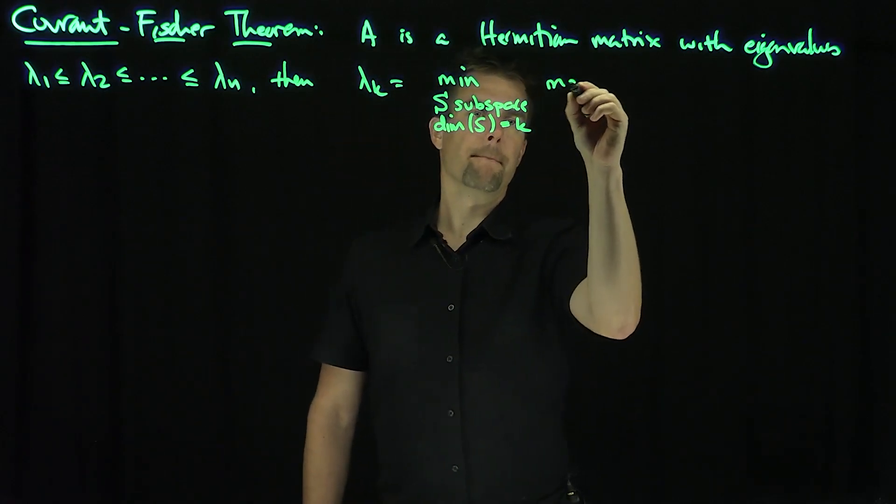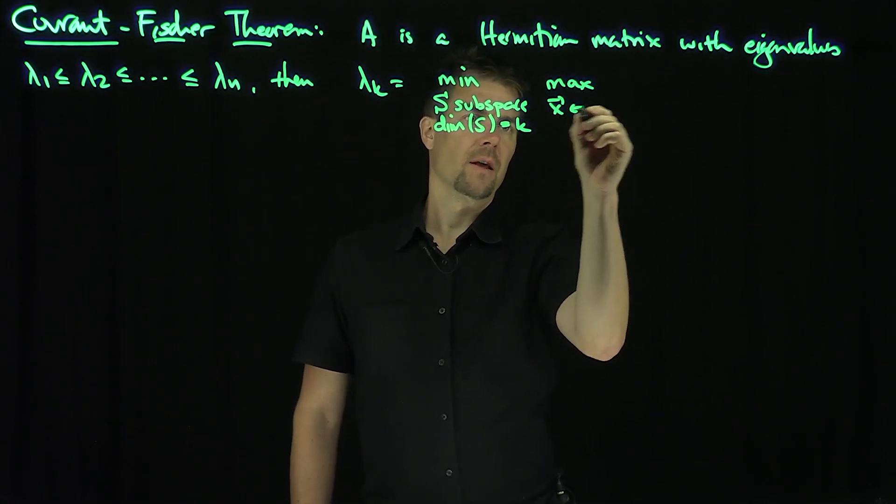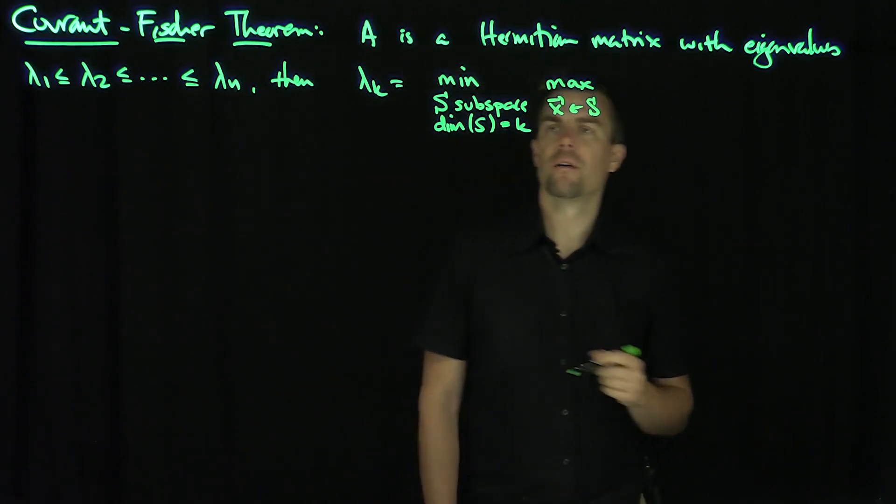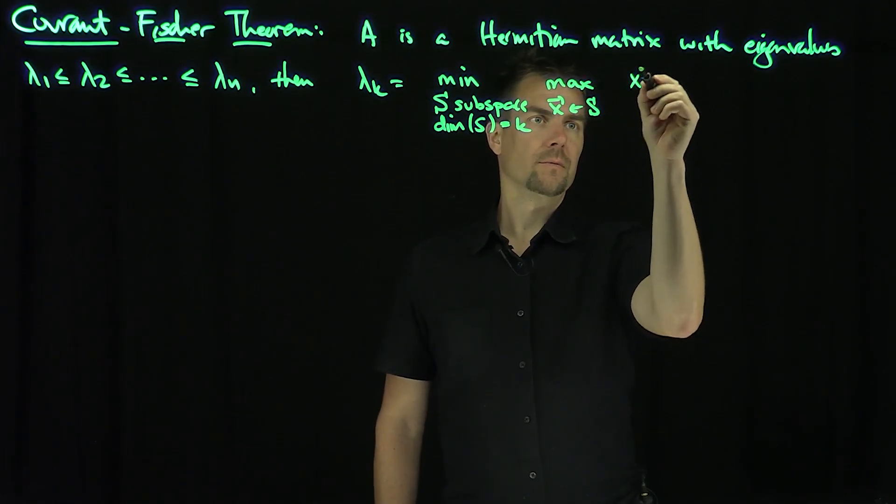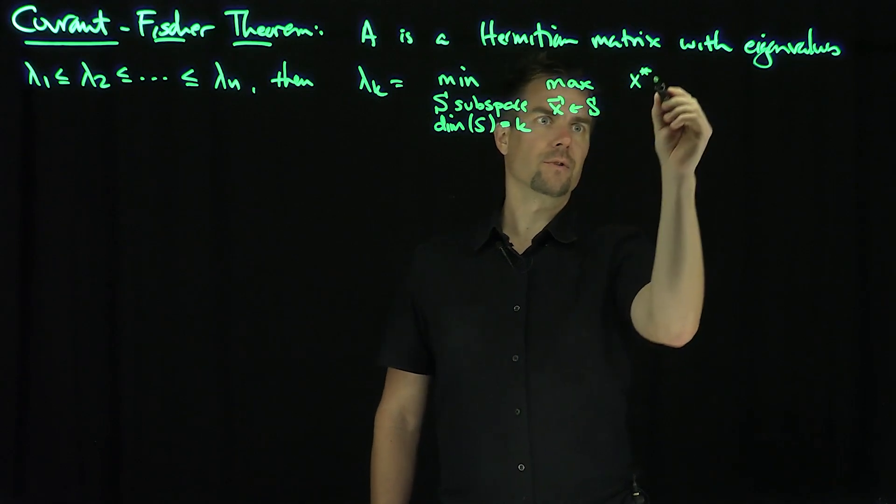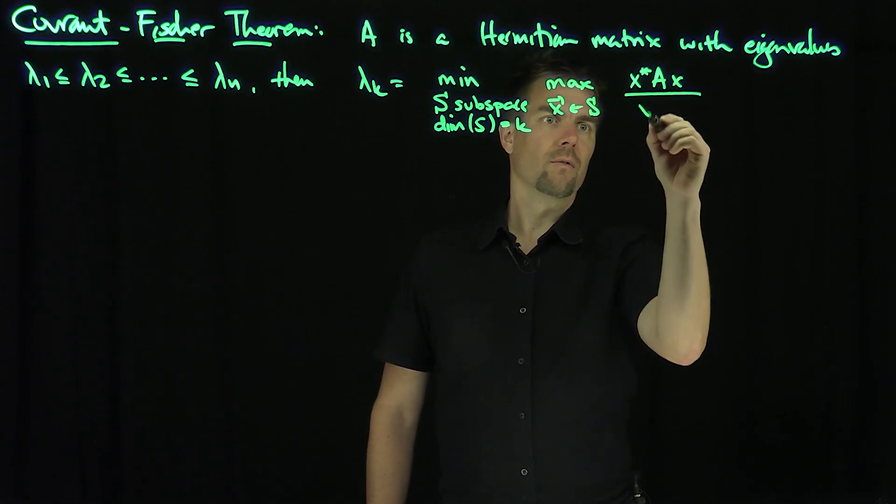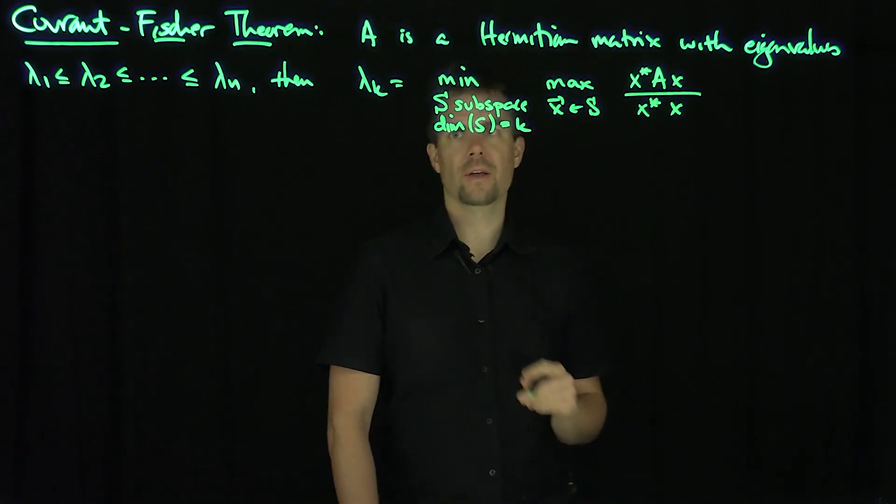in that subspace of the Rayleigh quotient. And the Rayleigh quotient is going to be x*Ax over x*x, suppressing the vector notation just for simplicity.